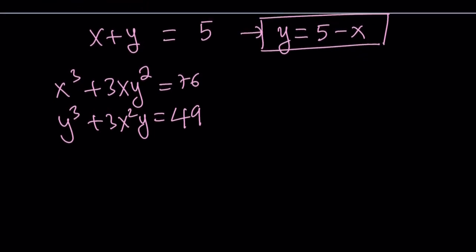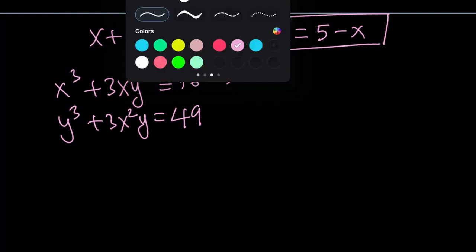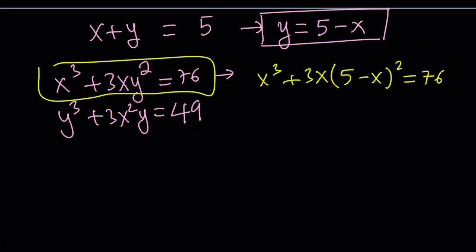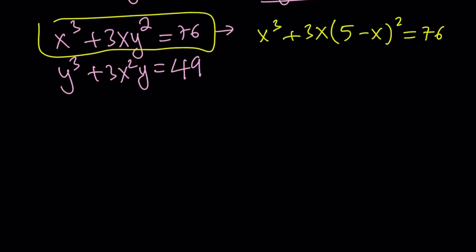Which one are we going to use? It doesn't really matter, but I want to use the first one. I don't want to cube 5 minus x because I'm too lazy. Let's use the first equation and see what happens. We're going to replace y with 5 minus x, square it, and set the whole thing equal to 76.